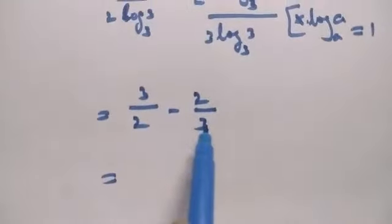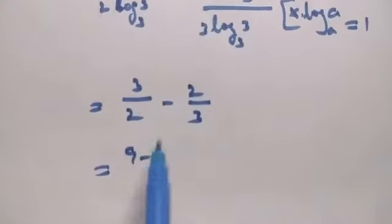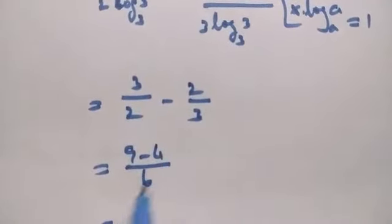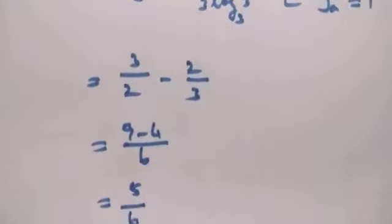Using cross multiplication: 3 times 3 is 9, minus 2 times 2 is 4, divided by 2 times 3 which is 6. 9 minus 4 equals 5, giving us 5 by 6.